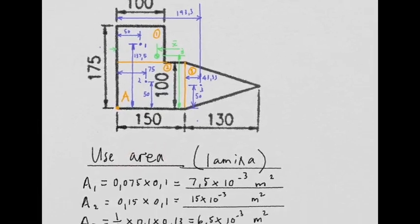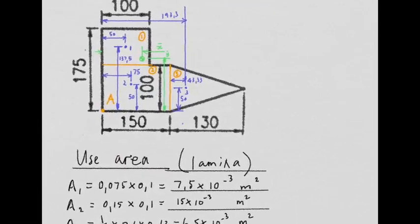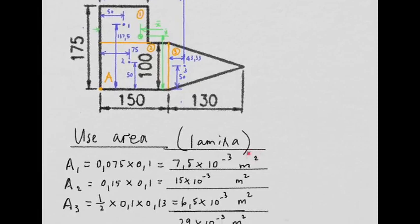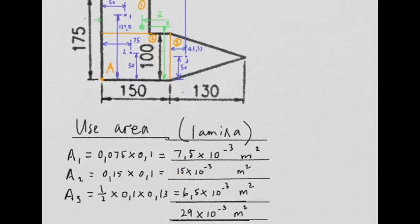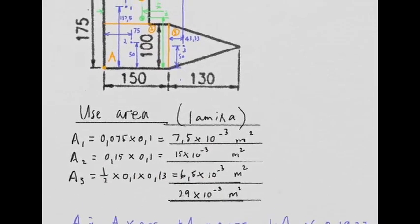So the first area of number one is a rectangle, there it is. Obviously the units are square meters because we are talking area. Now the second one, which is also a rectangle, there's its dimensions and units, square meters, 15 times 10 to the minus three. Finally the triangle, half times base times height would give you the area of a triangle. And you can add up the whole lot and get 29 times 10 to the minus three meters squared.